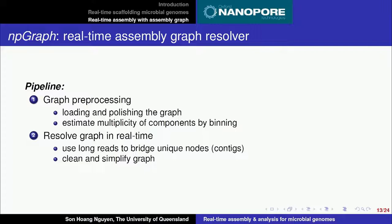Then comes the online phase when you resolve the graph in real-time together with the MinION running. This step is done by using long reads to bridge the unique nodes, or what we call the anchor contigs, and you can do cleaning and simplifying the graph at the same time. So you can see the graph being simplified as the sequencer is running.